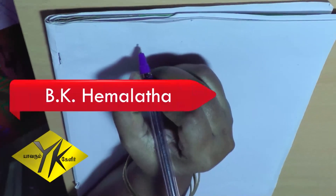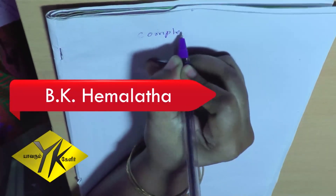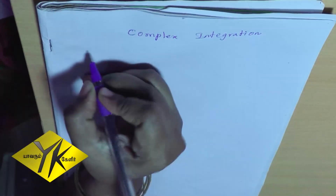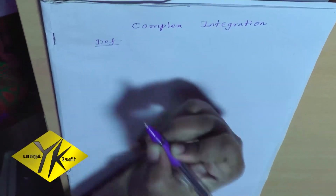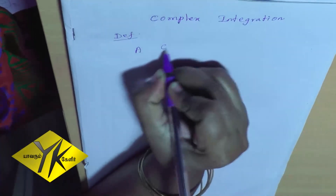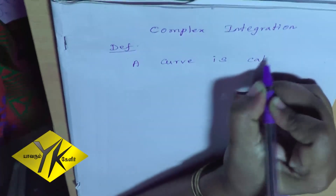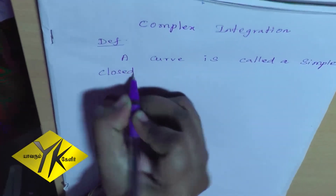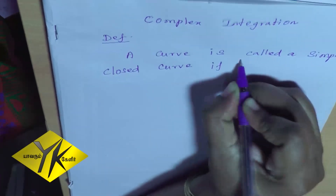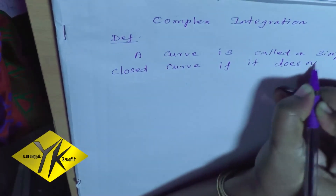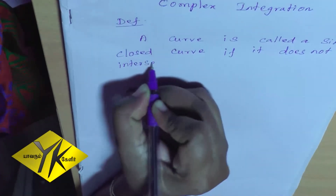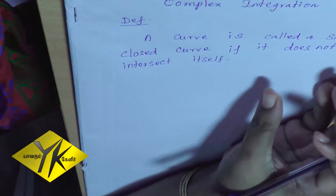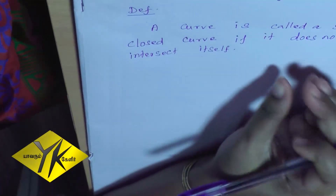Today we are going to see about complex integration. First we are going to see one definition: a simple closed curve. A curve is called a simple closed curve if it does not intersect itself.